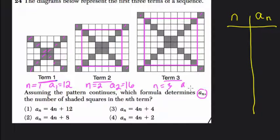So when n is 3, we know that a sub 3 is 4 more than 16, or 20. In our table, that would mean when n was 1, 2, and 3, a sub n was 12, 16, and then finally 20.